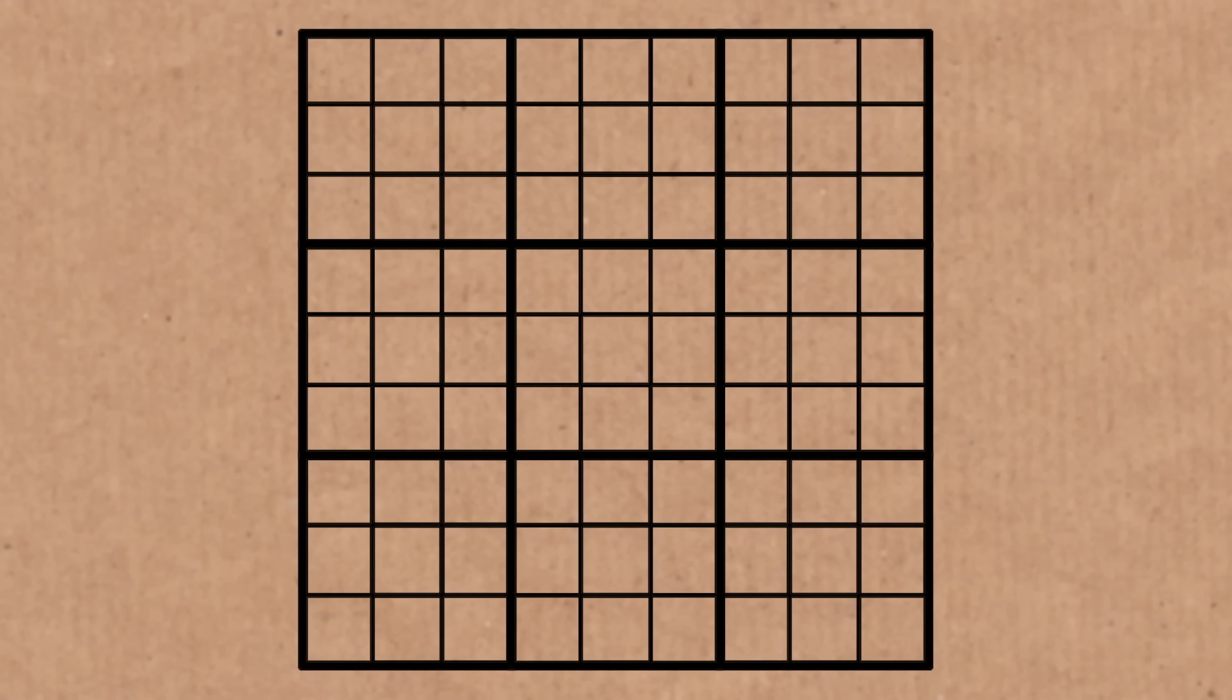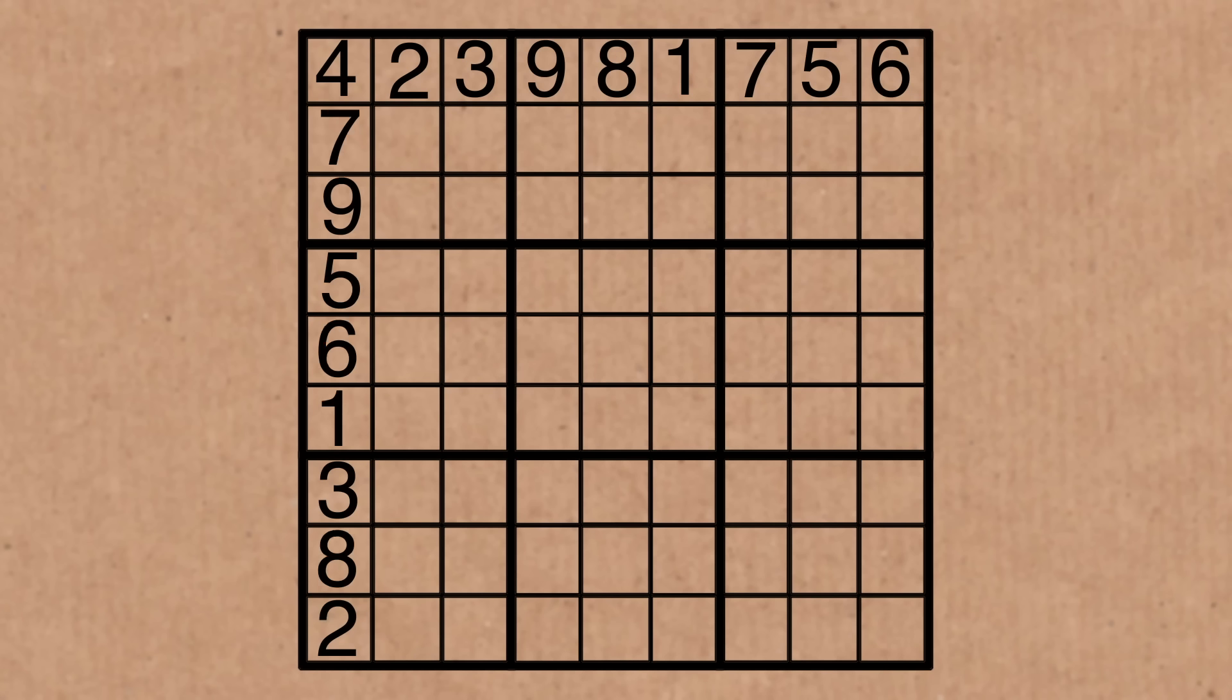The idea of Sudoku is you have to put the numbers 1 to 9 just once each into every row, every column and into every 3x3 box.